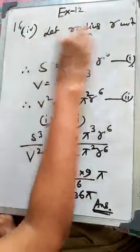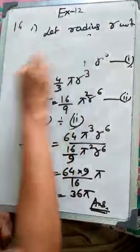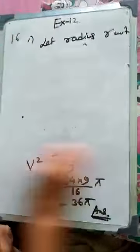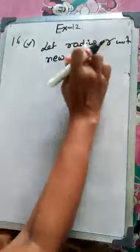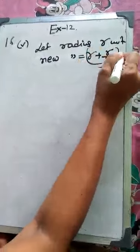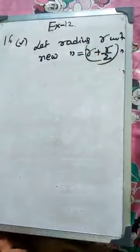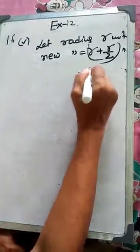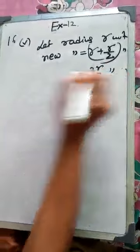So first we write the new radius. New radius is equal to R plus 50 percent means R by 2 unit. 50 percent means half of the previous one. So R by 2, it is the 3R by 2.